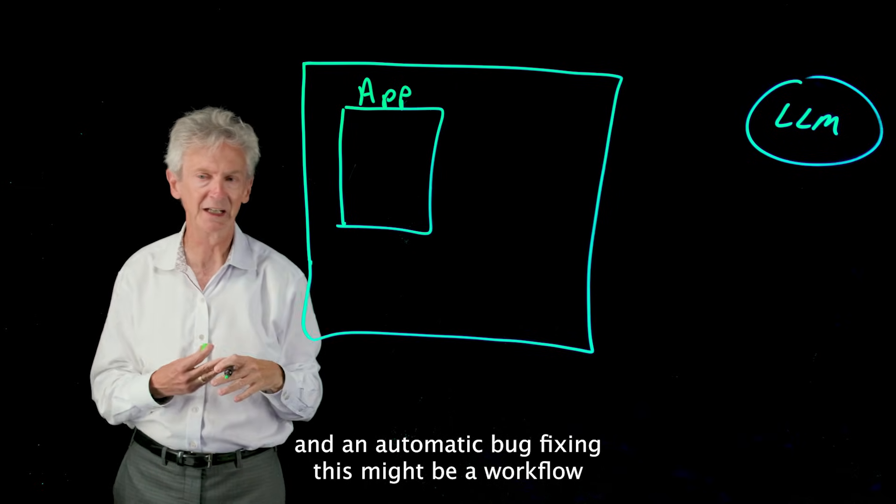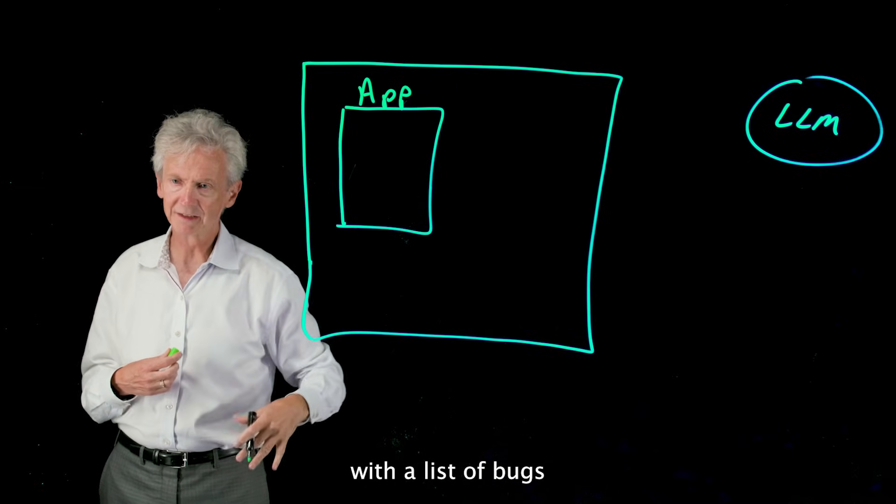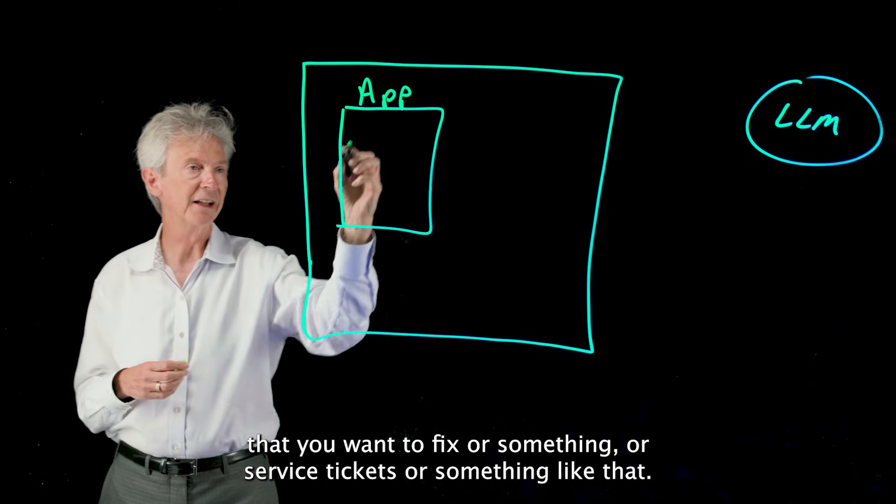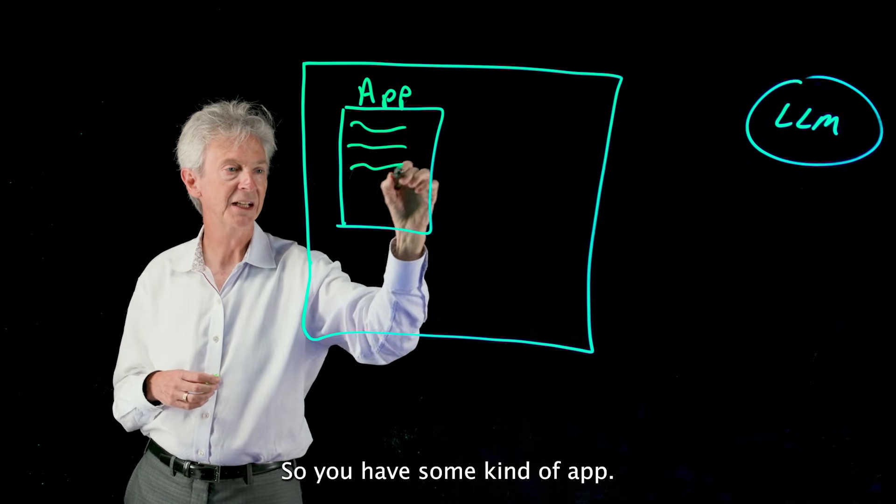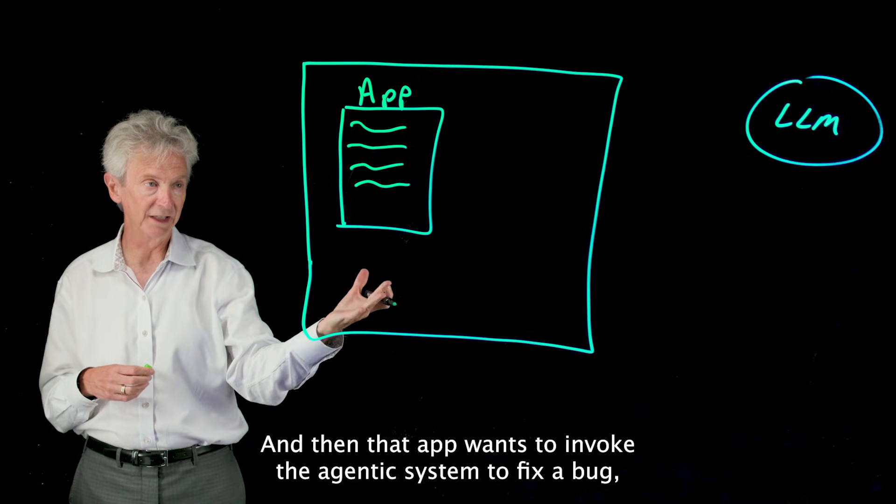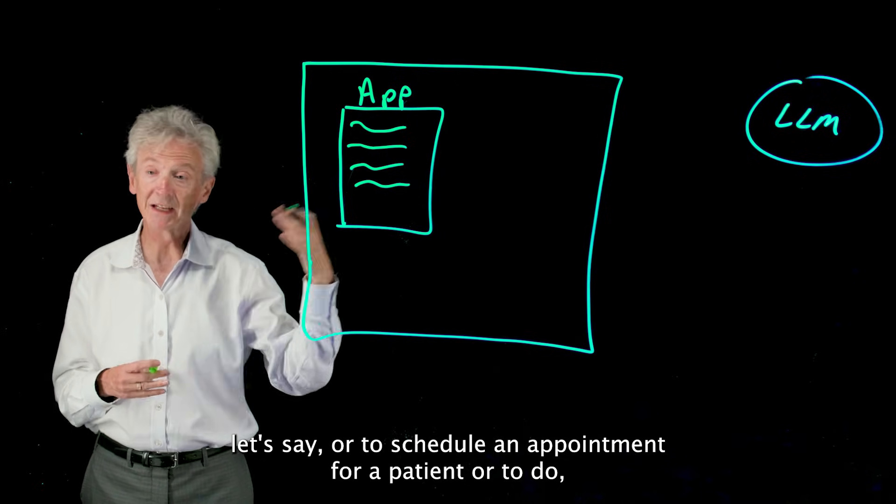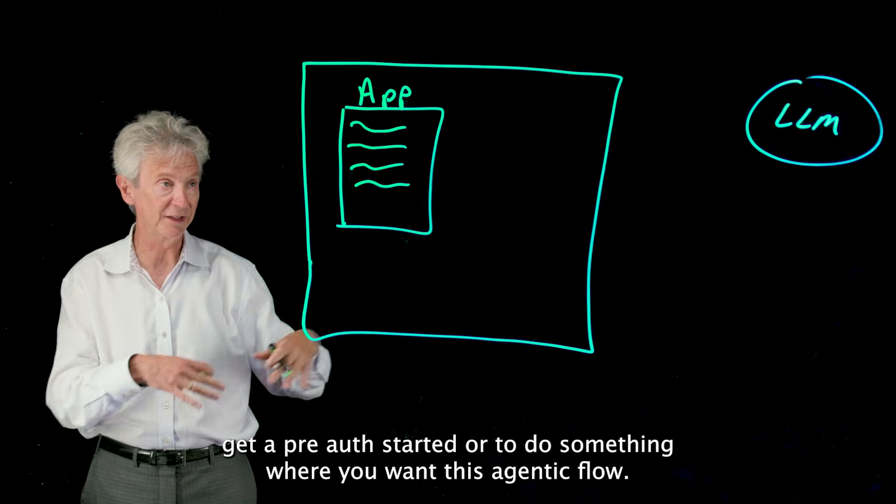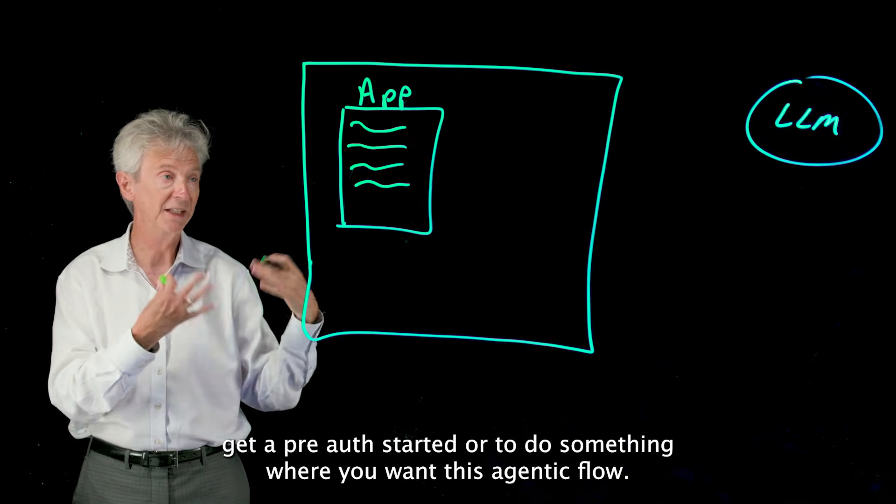But in your world you have your app, and in automatic bug fixing this might be a workflow with a list of bugs that you want to fix or service tickets or something like that. So you have some kind of app and then that app wants to invoke the agentic system to fix a bug, let's say, or to schedule an appointment for a patient, or to get a pre-auth started, or to do something where you want this agentic flow.